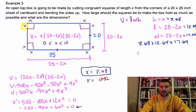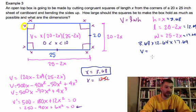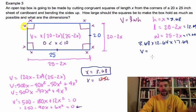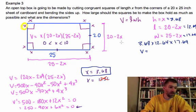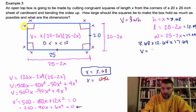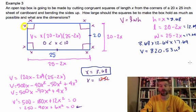My volume for that particular guy then, you just multiply all those dudes out. 3.68 times 12.64 times 17.64, I get 820.53 units cubed. And that would be the volume of this box for this problem.